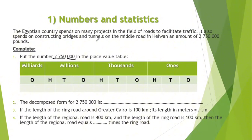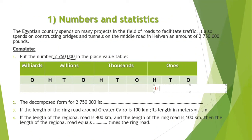How can I write this number in this table? In the ones family, I have 0 in units, 0 in tens, and 0 in hundreds. So I will write 0 in hundreds, 0 in tens, and 0 in units.